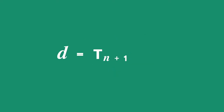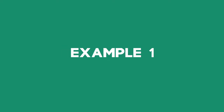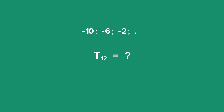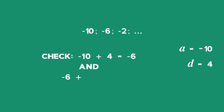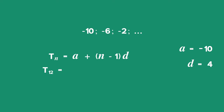Example 1: Finding a term in an Arithmetic Sequence. Find the twelfth term of the sequence negative 10, negative 6, negative 2, and so on. Solution: A is equal to negative 10. We confirm D by checking: term 2 minus term 1 equals negative 6 minus negative 10, which equals 4; and term 3 minus term 2 equals negative 2 minus negative 6, which equals 4. Remember to always check with two sets of consecutive terms. Using the formula, term 12 is equal to negative 10 plus (12 minus 1) multiplied by 4, which equals 34. The value of the twelfth term is 34.